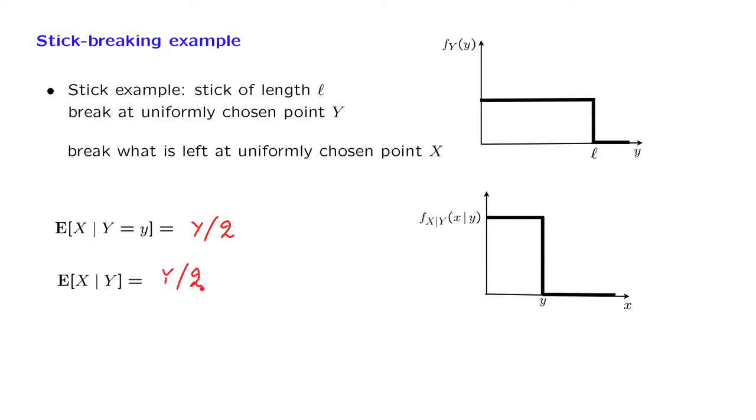This is a random variable that takes this value whenever capital Y happens to be the same as little y. So the abstract conditional expectation is a random variable because its value is determined by the random variable capital Y, and it is this particular function of the random variable capital Y.